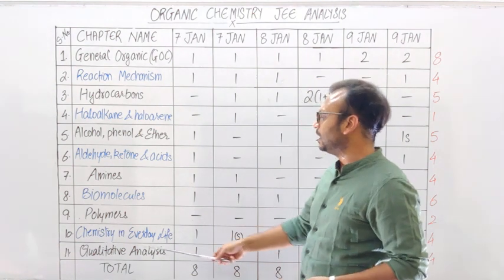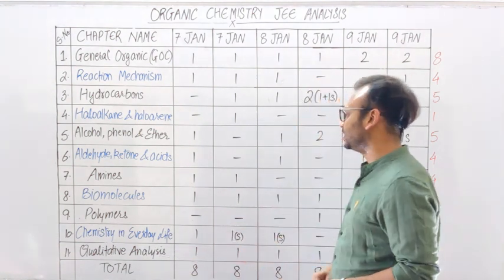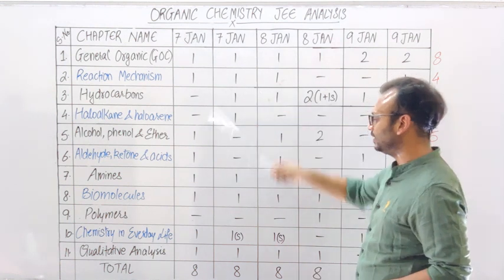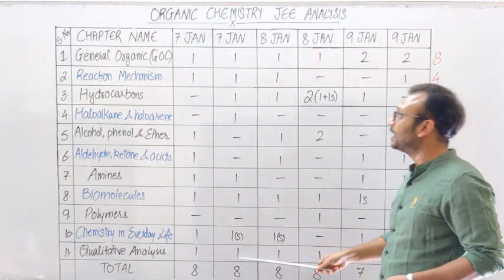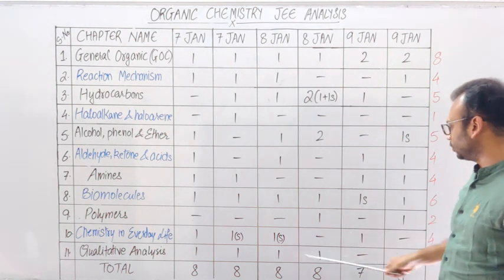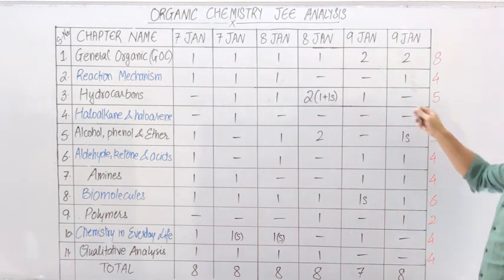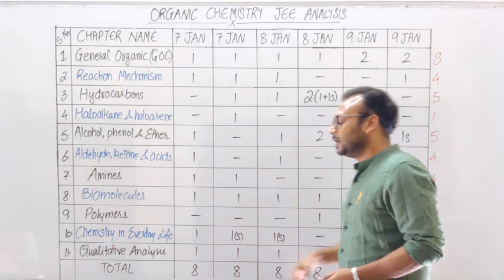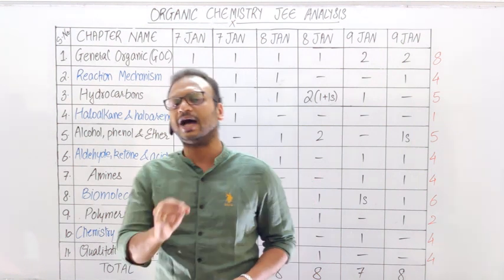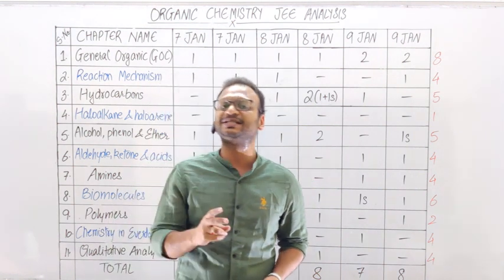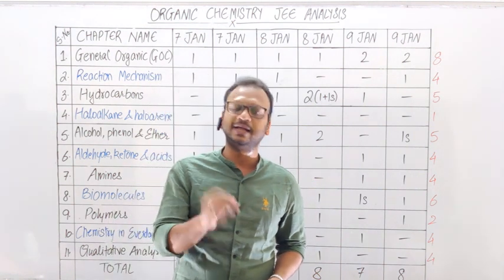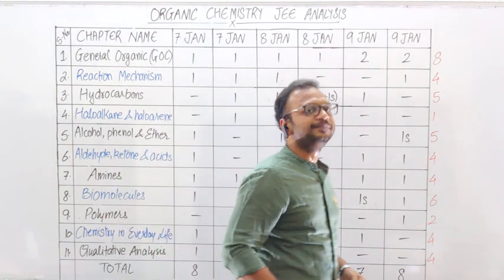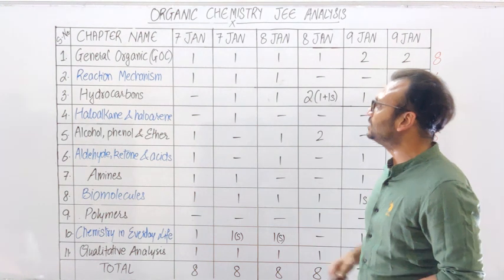Last topic आता है Qualitative Analysis। 7th January Morning और Evening Shift दोनों में 1-1 question था, 8th January Morning और Evening Shift में भी 1 question था, 9th January Morning और Evening में कोई भी question नहीं था। यानि total 6 papers में से 4 में 1 question था, बाकी 2 sets में question नहीं था।